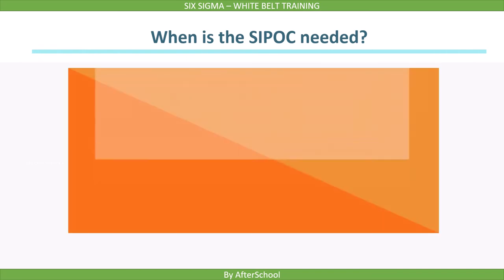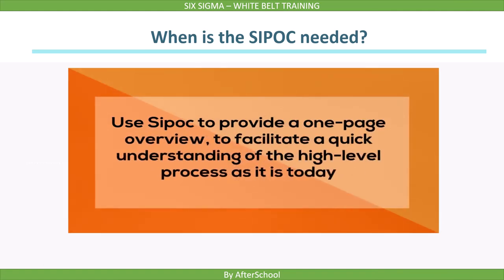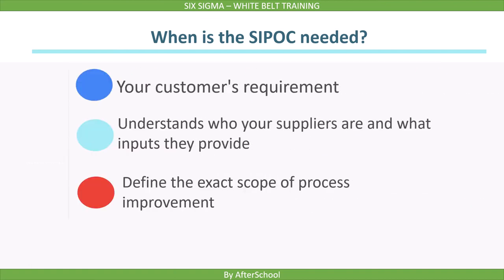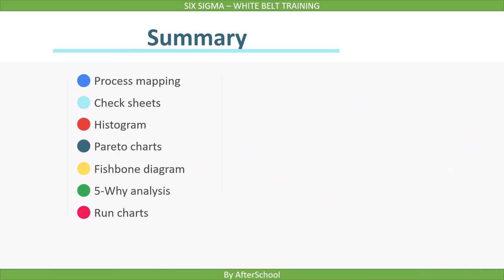SIPOC is the first tool we should consider when working with a process. Use SIPOC to provide a one-page overview to facilitate a quick understanding of the high-level process as it is today, better understand your customers' requirements, understand who your suppliers are and what inputs they provide, and define the exact scope of process improvement.